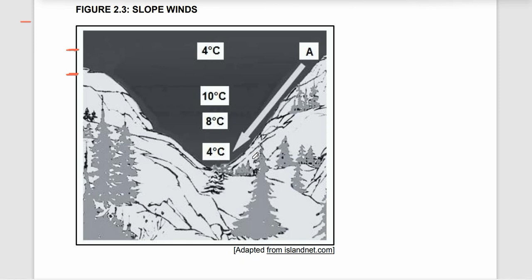We have to state the reason why katabatic winds move downwards. At the top of the mountain, the air is very cold. Cold air is dense and dry. Because of its density and gravity, the cold air on top of the mountain is pulled downwards to the valley floor. As it moves down, you can see the temperature increases — from 4 degrees, to 8, to 10 degrees Celsius.